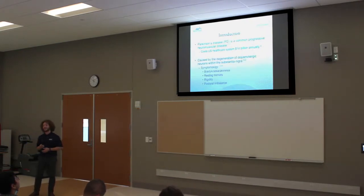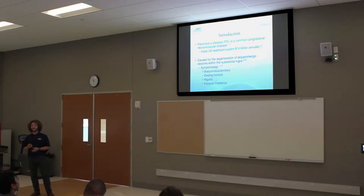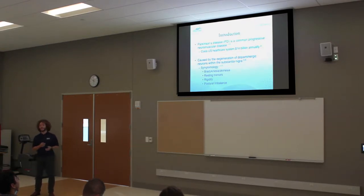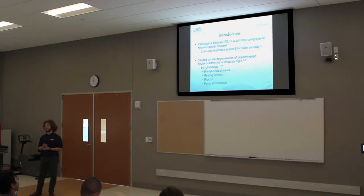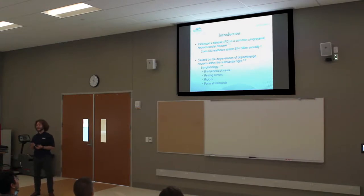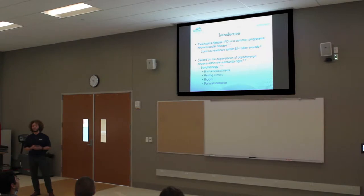Parkinson's is caused by the degeneration of dopamine-producing cells within the basal ganglia of the brain in the substantia nigra. The basal ganglia is responsible for cognitive function, voluntary movement, emotion, things like that.